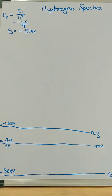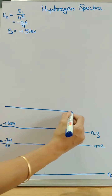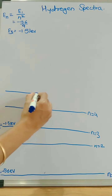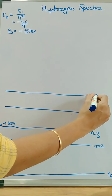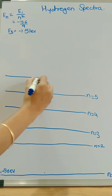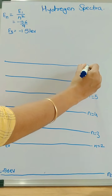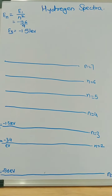Similarly, find the energy values for N = 4, 5, 6, 7 and so on using the formula En = E1/n². You can refer to the previous video which explains the relation between E and N to find the different energy levels for hydrogen.